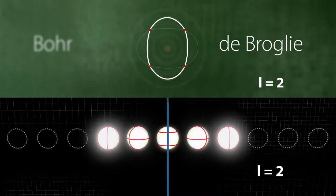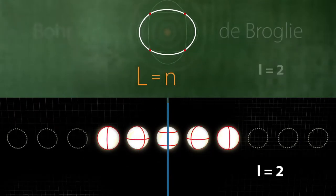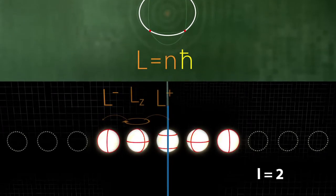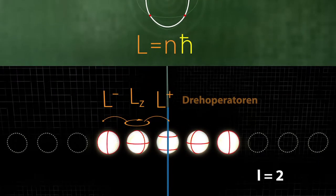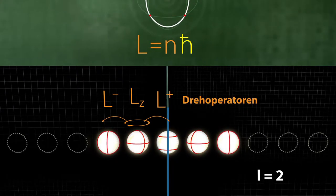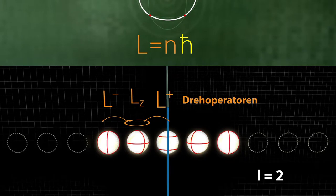In quantum physics, we interpret the postulate L is equal to n times h-bar differently. Angular momentum becomes a rotation operator. In order to analyze electron states, let us start with eigenstates with regard to the rotation operator about the z-axis.